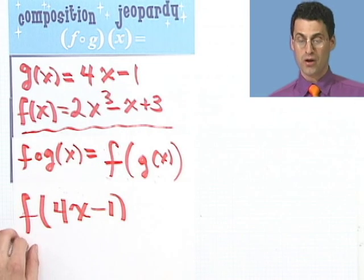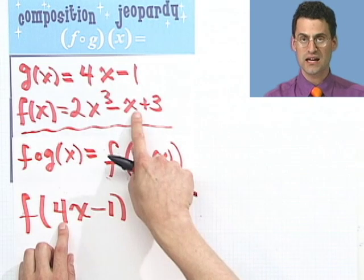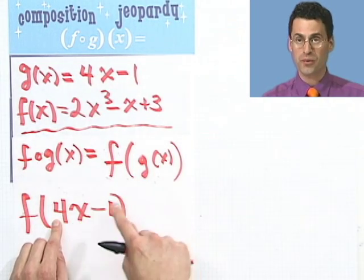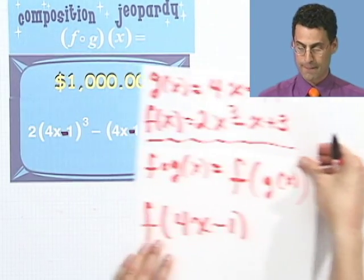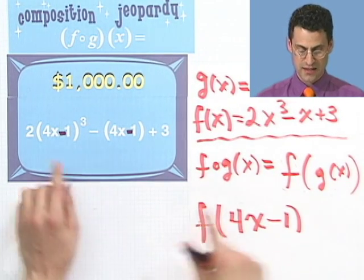So what do I do now? Wherever I see an x in the f function, so here and here, I have to actually insert right there the quantity 4x minus 1, wherever I see that x. But when you do that, look what you see. What you see is exactly this.